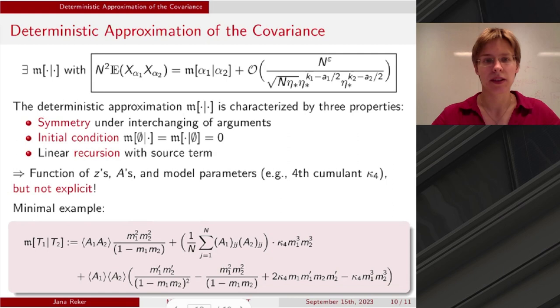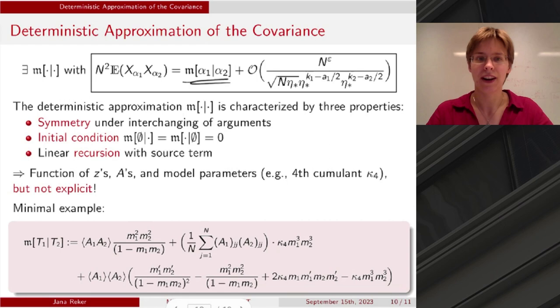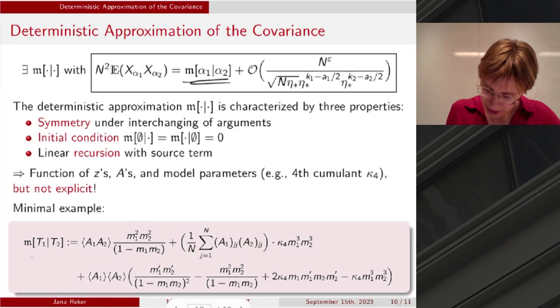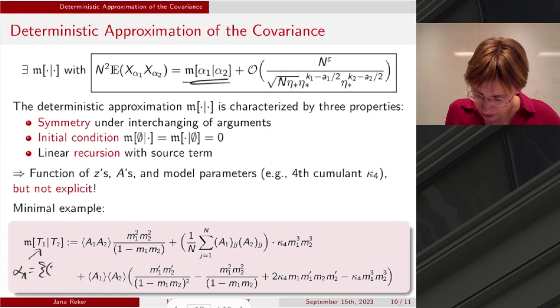And by inspecting this recursion namely the source term and the coefficients that we find in it one can see that this leading term involves the resolvents and the deterministic matrices as well as some parameters of the entry distribution of the Wigner matrix that we put in. However, this is not explicit and if I want this m for say multi index involving alpha one involves five spectral parameters and five deterministic matrices and alpha two involves three spectral parameters and three deterministic matrices then I have to start either with the initial condition or with the sort of minimal example that I computed down here and just run it through the recursion until I have the length.